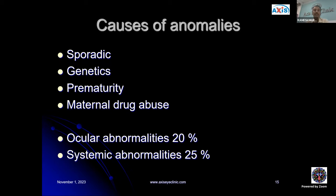The causes of these anomalies could be sporadic, genetic, prematurity, or maternal drug abuse. When these problems are present, other ocular abnormalities are found in about 20% of cases and systemic abnormalities in 25% of cases.